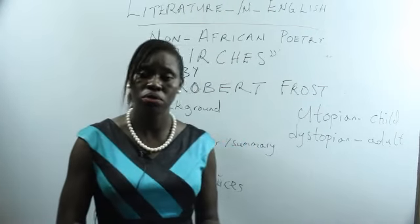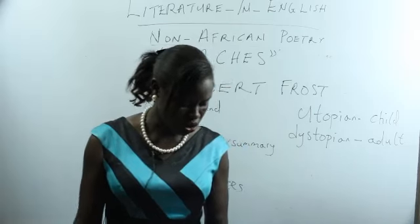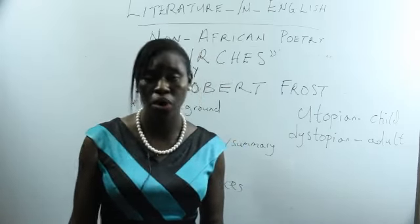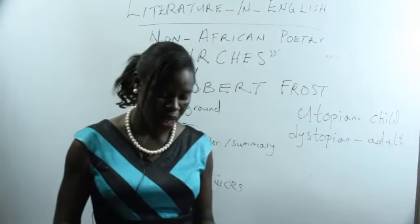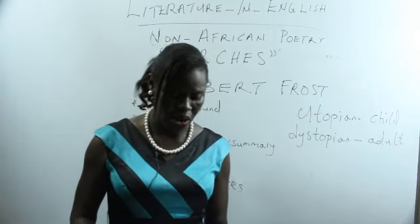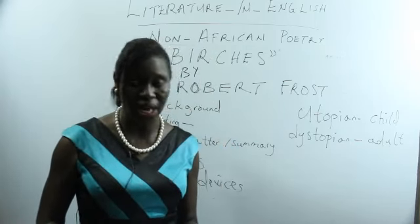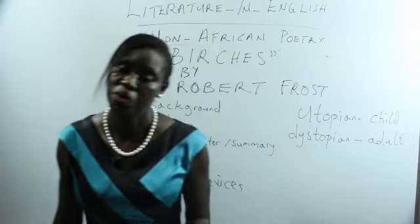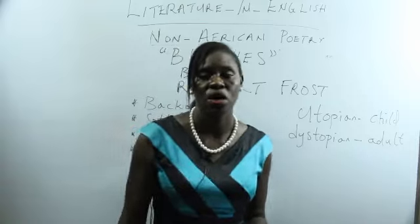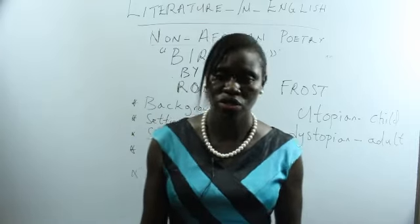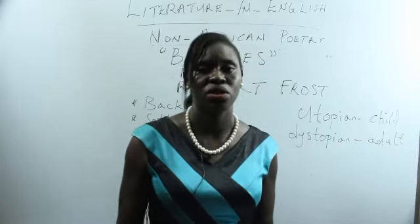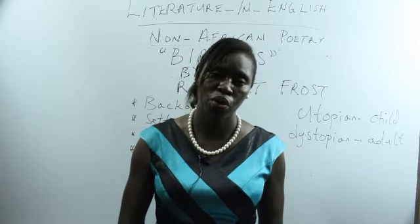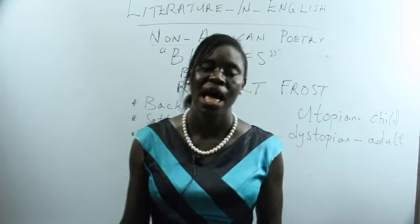Now look at this question: 'Birch tree swinging is a temporal distance from earthly worries. Discuss.' Another question: 'Comment on the language and diction of the poem.' In the course of this class, some questions will be displayed on your screen so as to determine how much you have learned. Thank you.